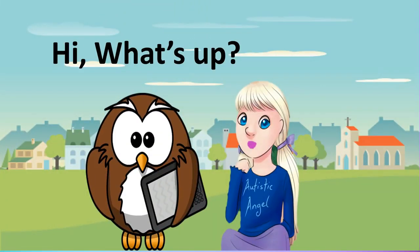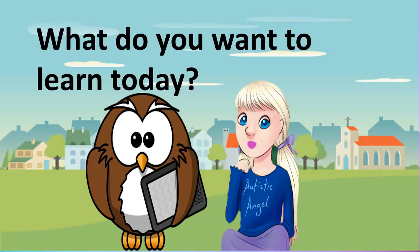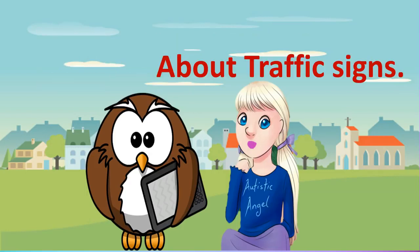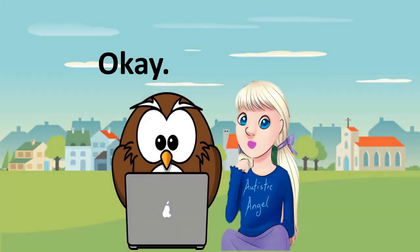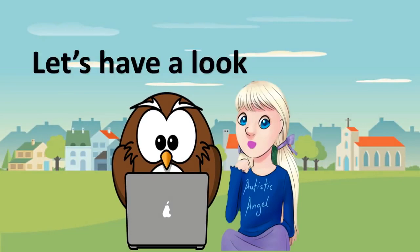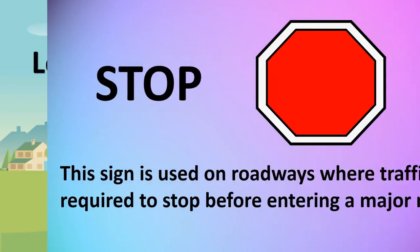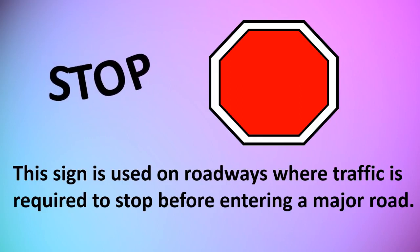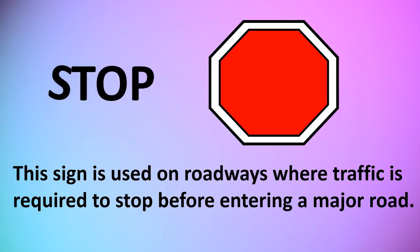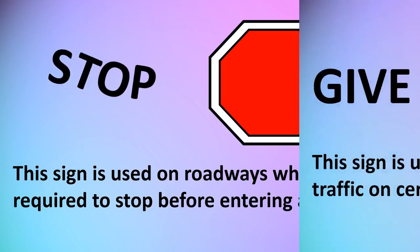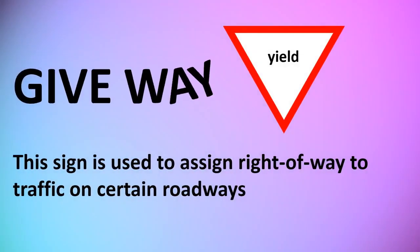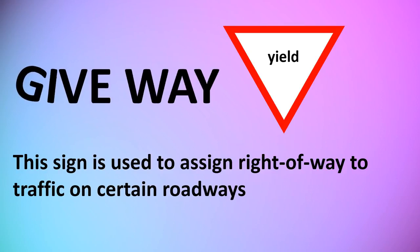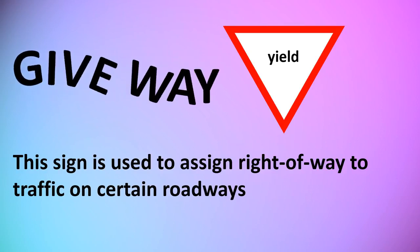Hi, what's up! What do you want to learn today about traffic signs? I want to know the significance of these road signs. Okay, let's have a look. Stop: this sign is used on roadways where traffic is required to stop before entering a major road. Give Way or Yield: this sign is used to assign right of way to traffic on certain roadways.